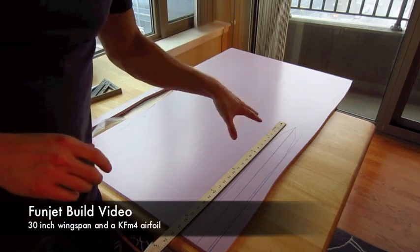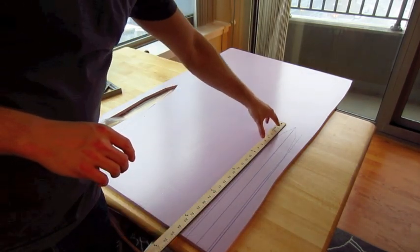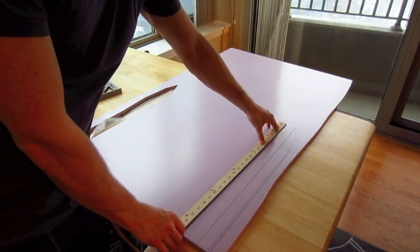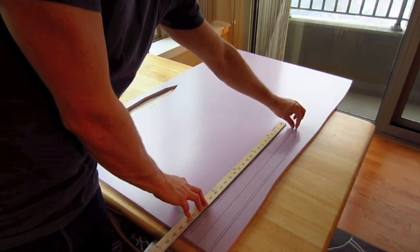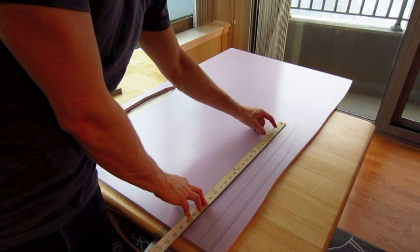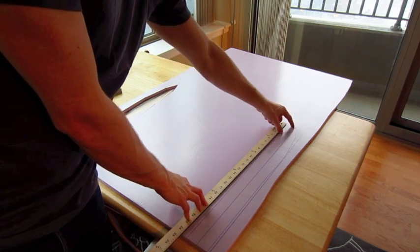All right, so I just want to make sure you guys clearly know how to do this. So this is 24½ inches long and it starts out and it bulges, it goes out to 2 inches wide at 2½ inches from the front.